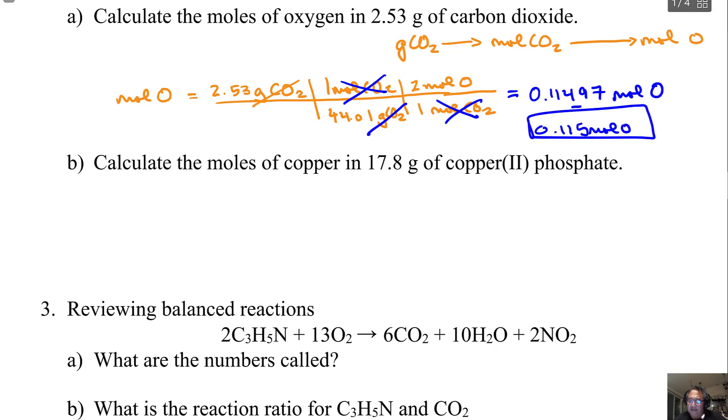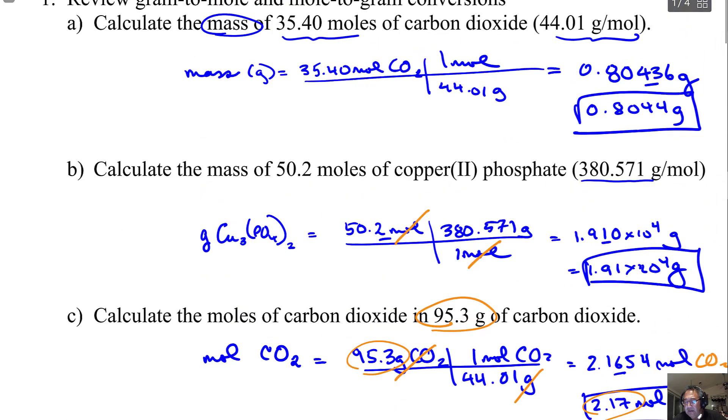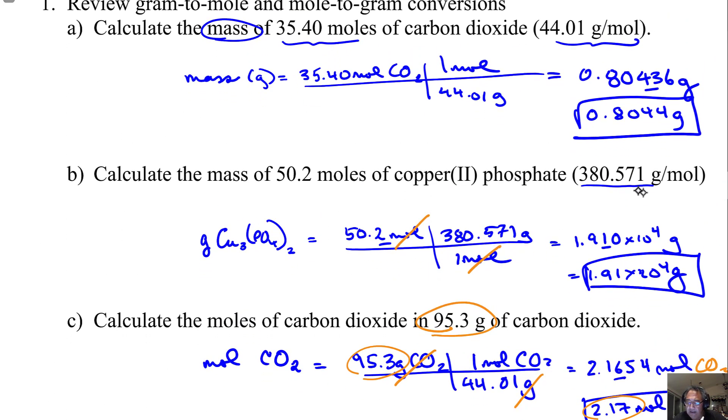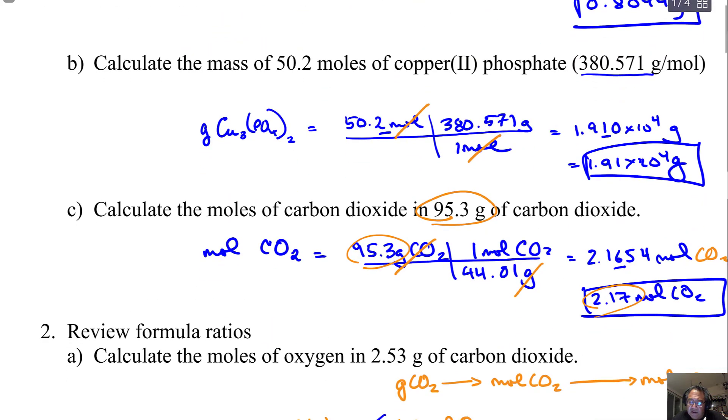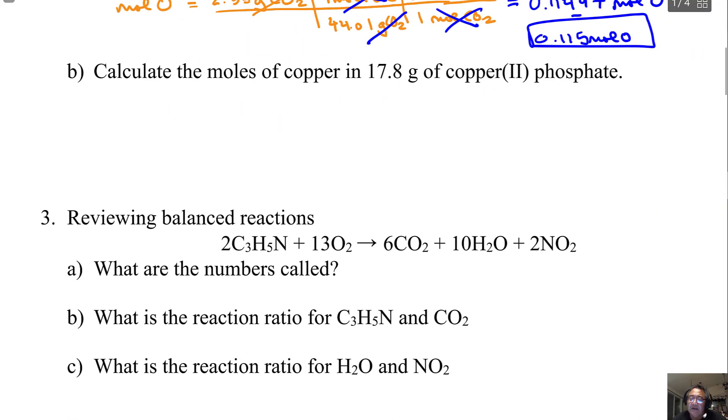So I want you to do the same thing to calculate the moles of copper in copper(II) phosphate. That's the same compound we used up here, and so this is the formula. You'll need to pull the formula ratio out of that chemical formula. I'll pause it here, you go ahead and try to work out the answer, and when you start the video I'll have the answer up on the screen.